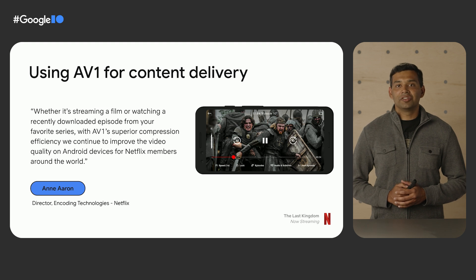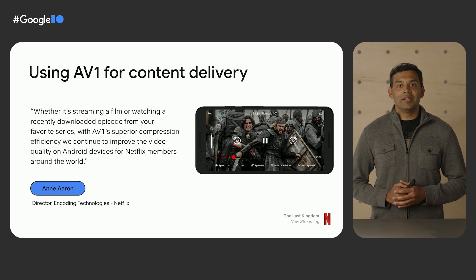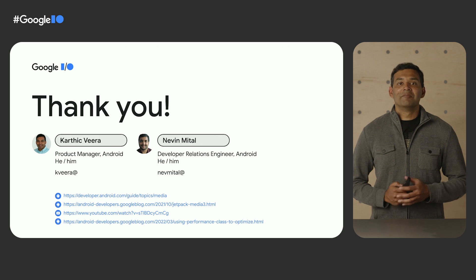For instance, we expect the addition of AV1 hardware decoder to increase the adoption of AV1 codec to deliver better video quality for users. Netflix especially has been an early adopter of AV1, taking advantage of AV1's greater compression efficiency to deliver videos with better quality on Android devices. In addition to content playback use cases, AV1 usage can significantly improve visual quality when sharing videos captured on the device. Google Duo has used AV1 codec for both encode and decode in low bandwidth conditions to improve video call quality. To learn more about these features, please visit the following links. That's all we have for you today. Thanks for joining us, and have a great Google I/O.